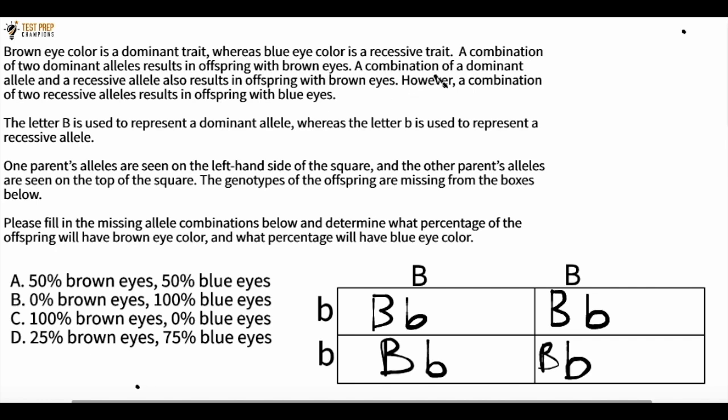So it tells us that a combination of a dominant allele and a recessive allele is going to result in offspring with brown eyes. So the dominant allele is big B. The recessive allele is this little B right here. And if we combine one dominant allele with one recessive allele, the offspring will have brown eyes.